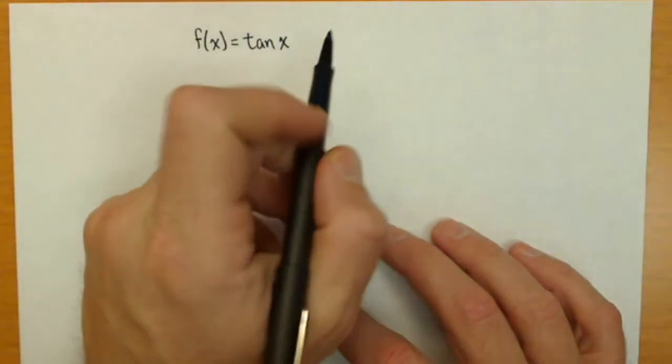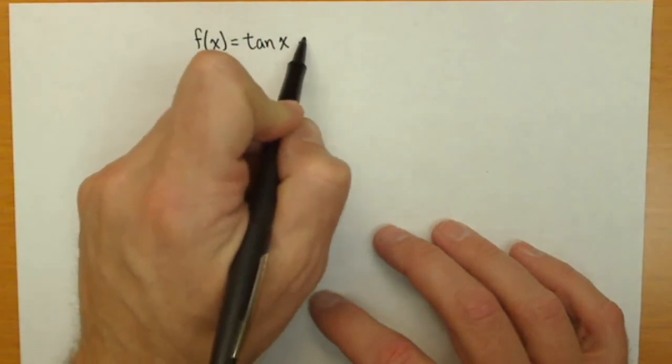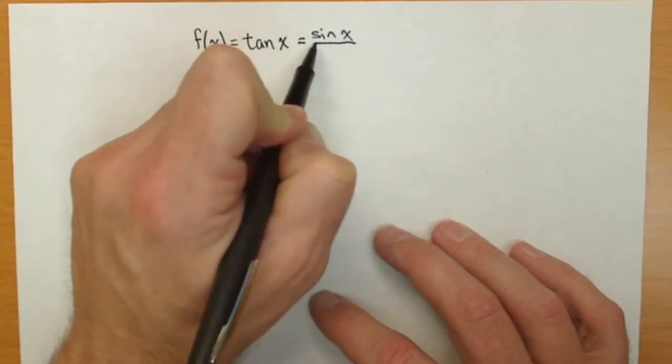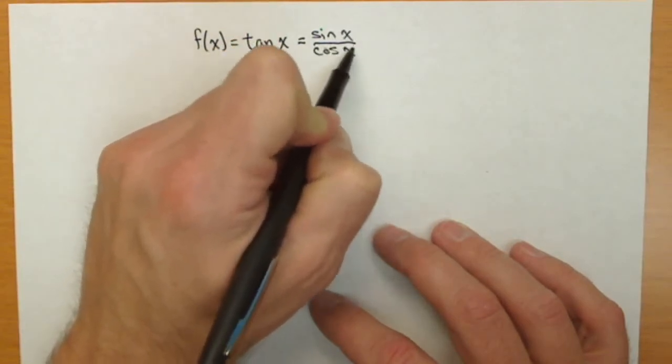In this video, we're going to discuss the derivative of tangent of x and how we can find it. So first thing, recall that tangent of x is sine of x over cosine of x.